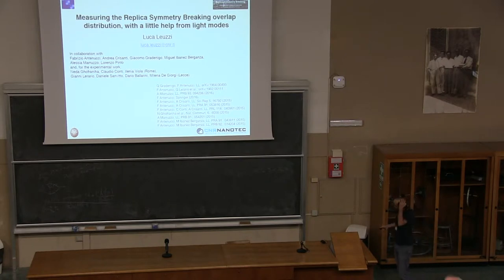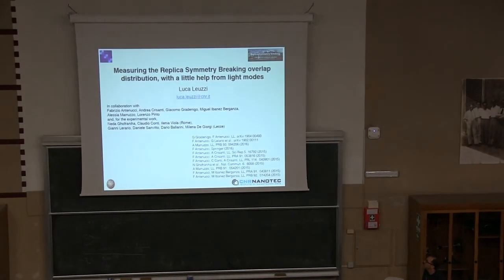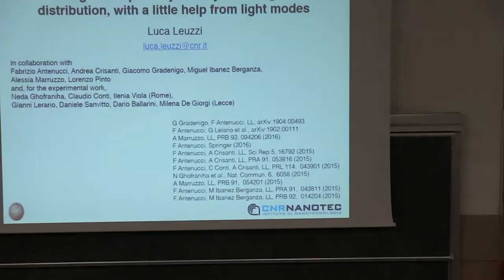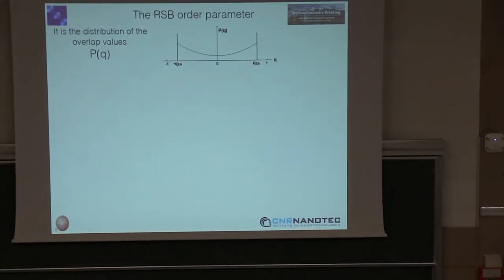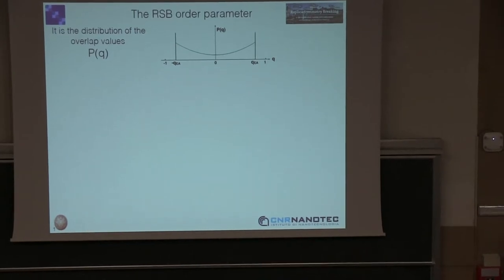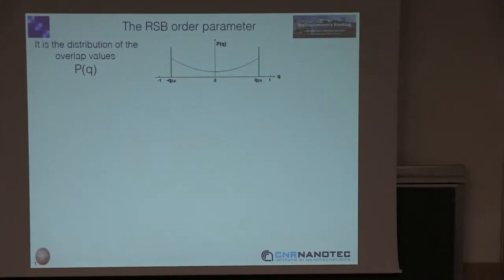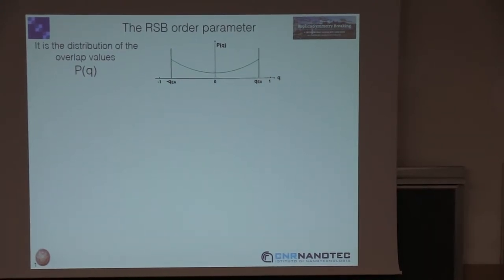The aim of the talk is to squeeze some work I've been doing in collaboration with a number of people, including experimentalists, in the last five years. The thing we wanted to do is to look at whether we can measure the whole distribution of the overlap parameters in a replica symmetry breaking system in a phase.